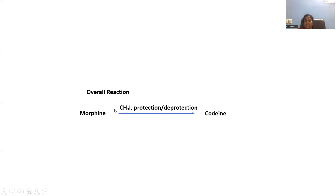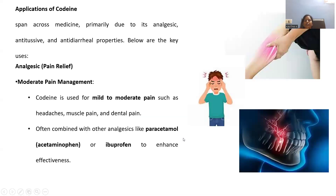The entire process: morphine is subjected to protection and deprotection process, and eventually subjected to chemical treatment with methyl iodide, and is simply converted into codeine — the compound being discussed in this session.